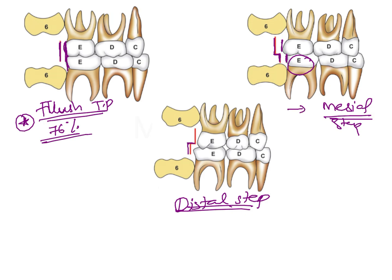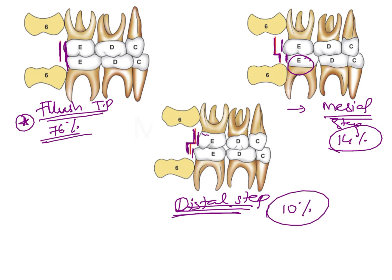In the distal step, the terminal planes are not in the same line and the mandibular molar is more distally placed compared to the maxillary molar. Mesial step is seen in about 14% of the population and distal step in about 10%. So the order from most to least common is: flush terminal plane, then mesial step, then distal step.